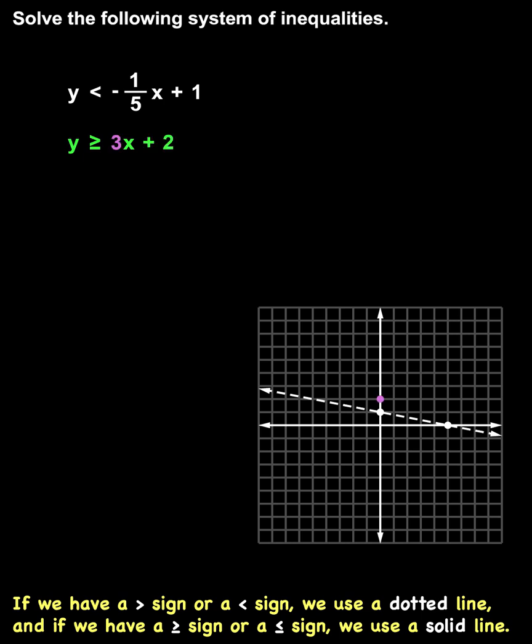From there, we take our slope of three, or three over one, so we go up three and to the right one, and plot a second point.